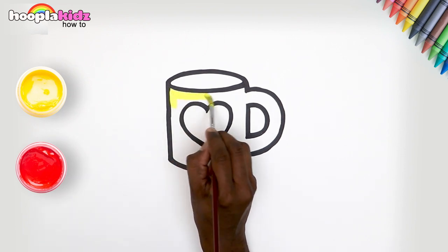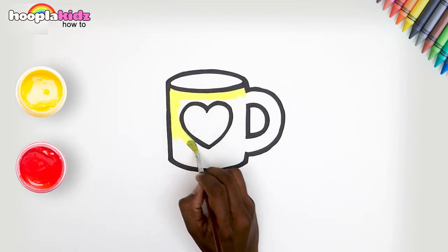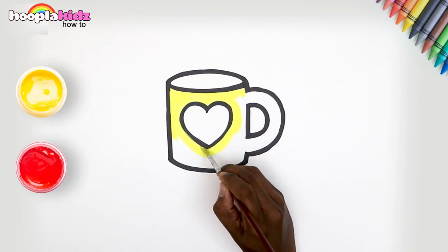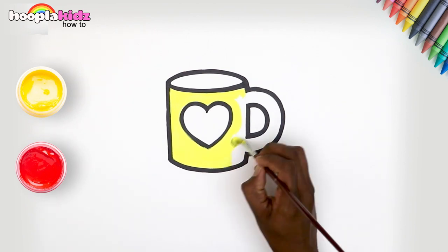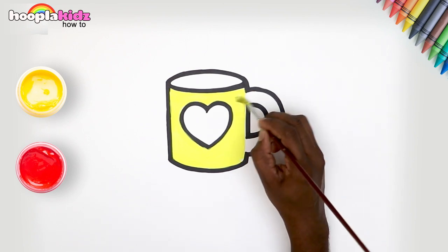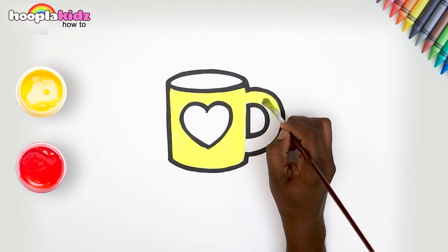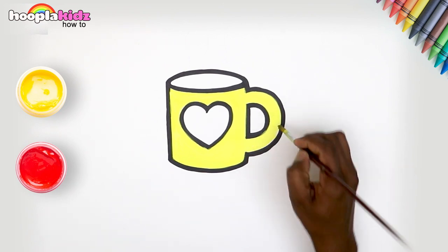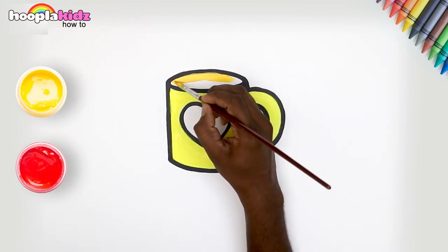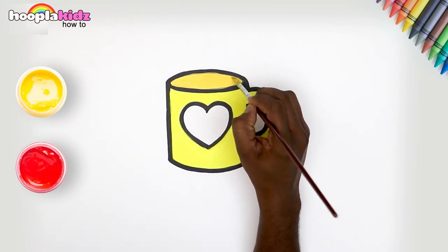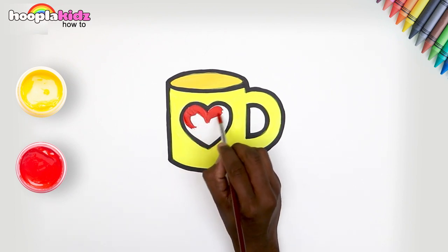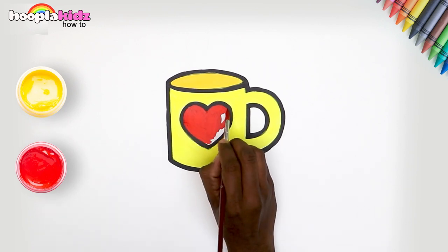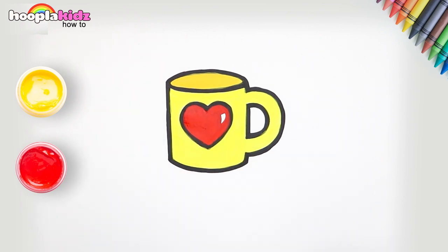Time for some fun. Let's paint. A bright and lovely yellow. We're doing great. Just keep going. Let's complete the mug with yellow color. And now, the little heart with red. Good. Just stay in the lines. We're almost done. Here is our finished mug. Good job. See you next time.